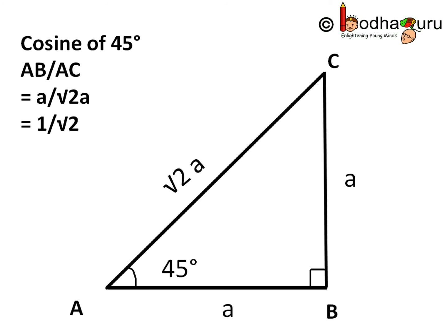Cosine of 45 degree is equal to AB, the adjacent side, by hypotenuse AC, which is equal to A by square root of 2A. A cancels, so we are left with 1 by square root of 2.